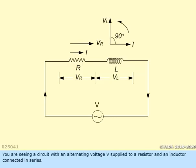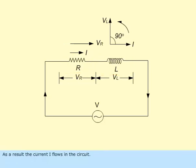You are seeing a circuit with an alternating voltage V supplied to a resistor and an inductor connected in series. As a result, the current I flows in the circuit.